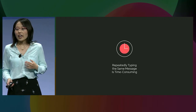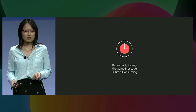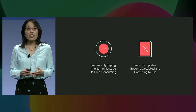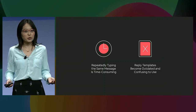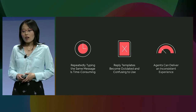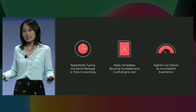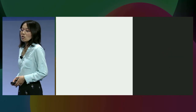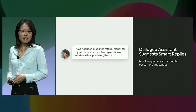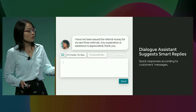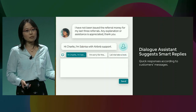However, we observed some frustrations in the chat experiences. That's why we built Dialogue, a customer service chat system. First, we observed that agents would repeatedly type or copy-paste the same message over and over again, which is very time-consuming. Second, there exist some reply templates, but over time they become hard to maintain, outdated, and very confusing to use. Third, agents can deliver an inconsistent experience through self-developed reply templates and grammar and spelling errors. So we built a Smart Reply feature to recommend quick responses based on the customer's message.